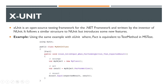XUnit is an open source testing framework for the .NET framework, written by the inventor of NUnit. It follows a similar structure to NUnit but introduces some new features. In XUnit, 'Fact' is equivalent to TestMethod in MS Test. You introduce the XUnit namespace above the test, create a simple XUnit test class, and use the Fact attribute. All other things are the same — Given-When-Then and Arrange-Act-Assert patterns apply.